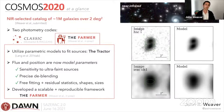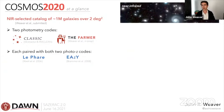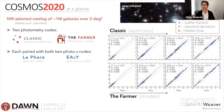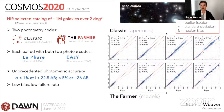THE FARMER also provides free fitting and residual statistics, shapes and sizes. Each of the two photometric catalogs is paired with two photometric redshift codes — LePhare and EAZY. I show the photometric redshift performance versus spectroscopic redshifts for the CLASSIC version on top and THE FARMER version on the bottom, for four bins of magnitudes from 17th to 27th magnitude. We find unprecedented photometric accuracy, achieving sigma_NMAD less than 1% on the bright end and less than 5% on the faint end, with low bias and low failure rate.